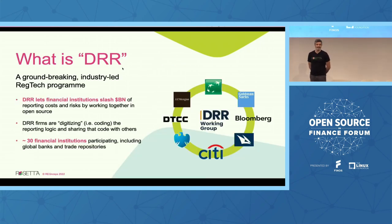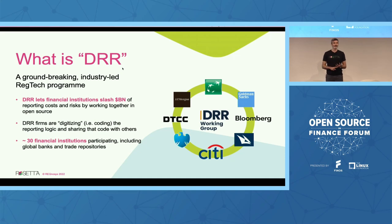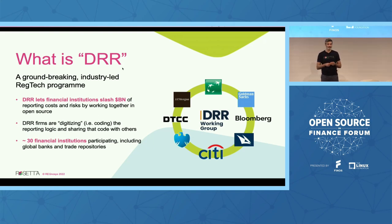What is DRR — digital regulatory reporting? It's effectively a groundbreaking industry-led regtech program that lets financial institutions slash billions of dollars of reporting costs and risk by working together in open source. DRR firms are digitizing — effectively coding the reporting logic — and they are sharing that code with others.